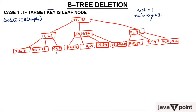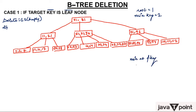Now the second case: delete 24. Where is 24? Here. Can you delete it? No — because this node is already having the minimum number of elements. So it is not possible to simply delete. In that case, when you want to delete and the node already has the minimum number of keys, the first option is to borrow from a sibling.